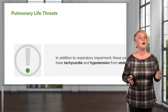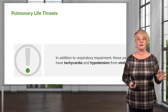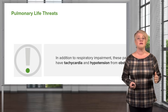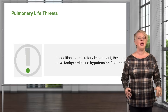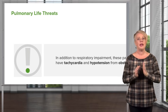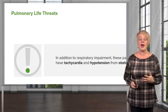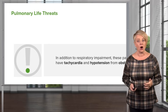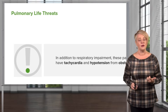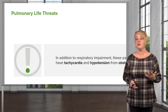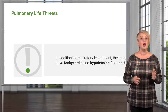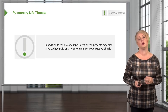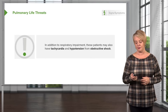Importantly, tension pneumothorax doesn't just affect the lung. In addition to respiratory impairment, patients will be in shock. Impaired venous return and mechanical compression of the heart prevent normal cardiac output, causing tachycardia and possible hypotension. Tension pneumothorax represents a form of obstructive shock, so look for both pulmonary and circulatory compromise.